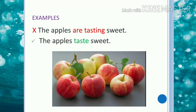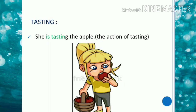Let us look at another example. 'The apples are tasting sweet' is grammatically incorrect because taste is a verb of perception and we have to avoid using it in continuous tense. So the correct usage is 'the apples taste sweet.' But 'she is tasting the apple' is correct, because here we are highlighting the action of tasting.